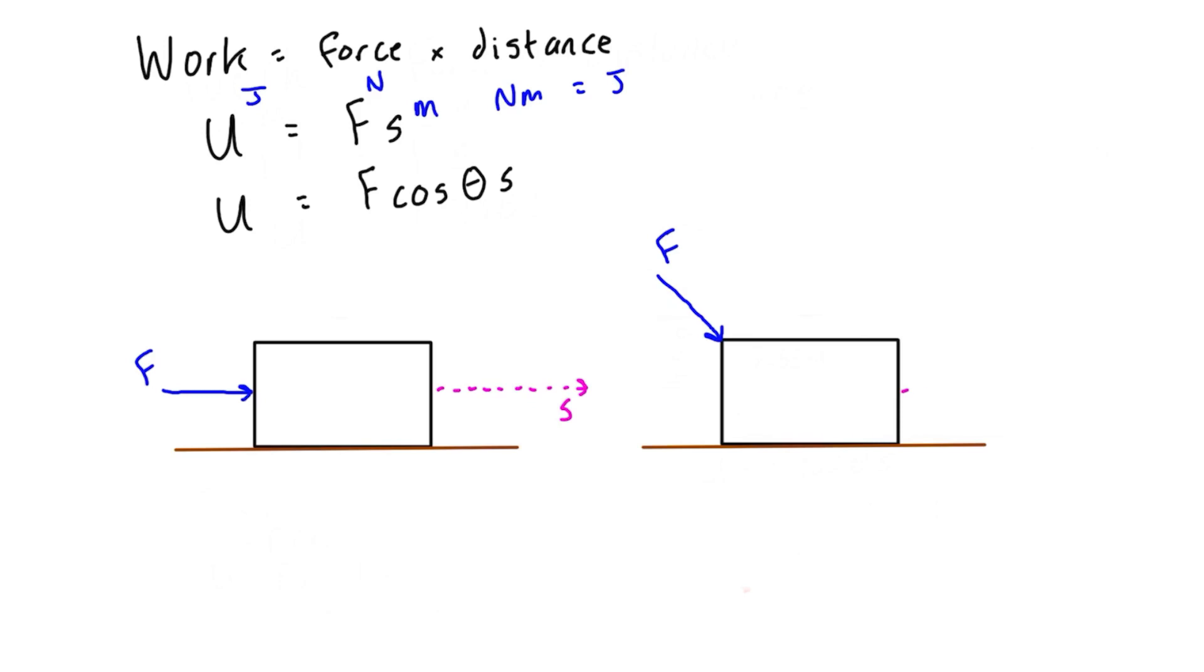The displacement as it slides across the floor is still going to be horizontally to the right, which is not in line with the force. There's some angle there, and we can label that - we'll draw a line parallel to S and label it as theta.